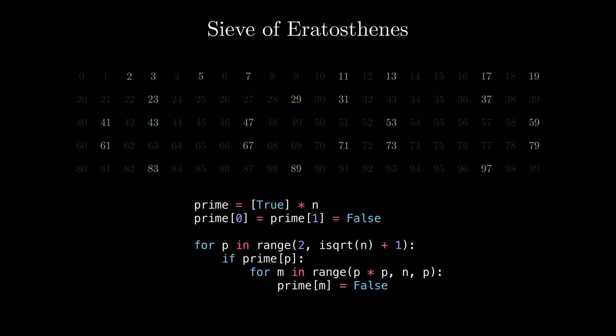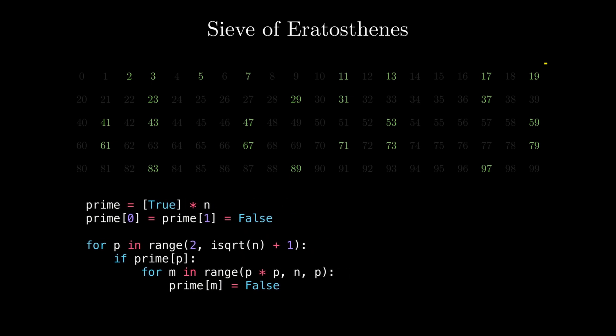Let's analyze the time and memory complexity for the Sieve of Eratosthenes. As we store an array of possibly prime numbers of size n, the algorithm consumes O(n) memory. The time complexity, on the other hand,